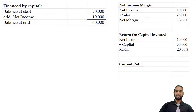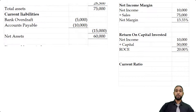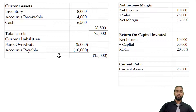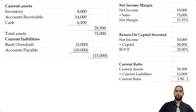The last ratio they want us to find is the current ratio. This requires us to take current assets — which we can see is 28,500 — and divide by the current liabilities, which equals 15,000. When we do that, we get a current ratio of 1.9 to 1.